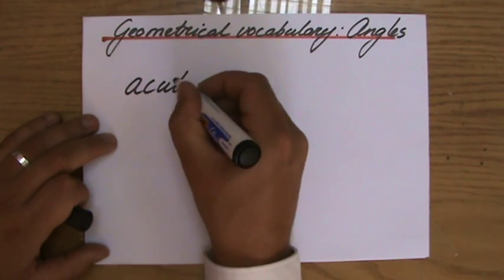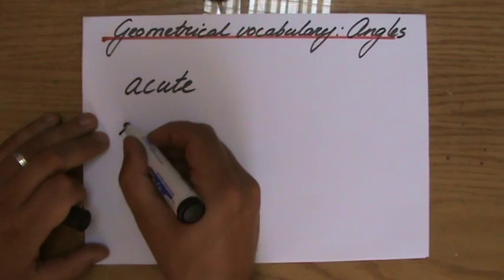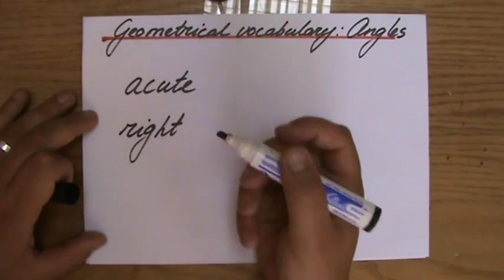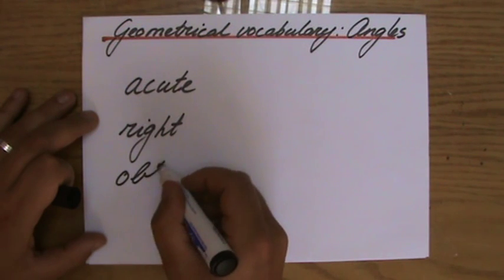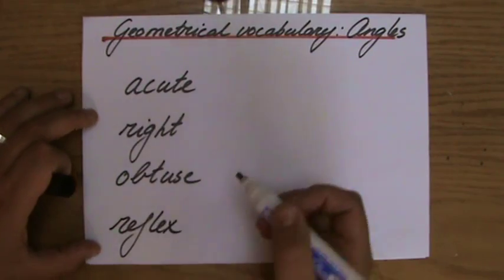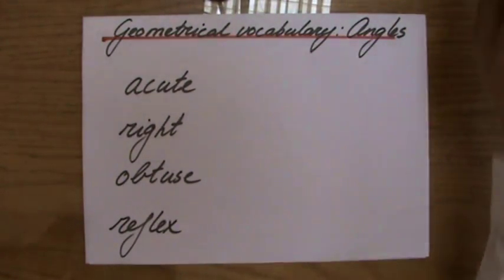I'll write it down: acute angles, then we have right angles. Do you know the next one? Indeed, obtuse angles, and the last one we call reflex angles.